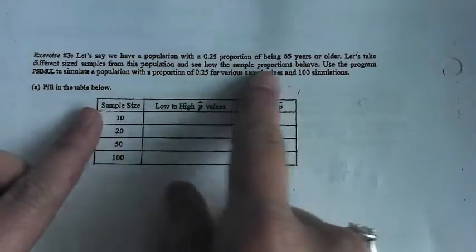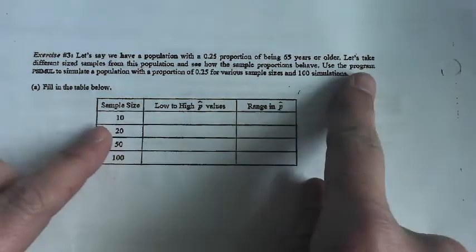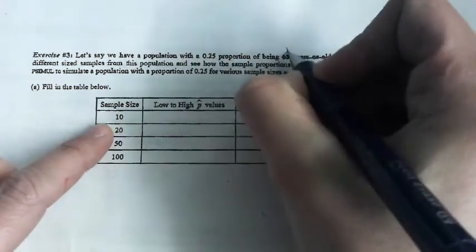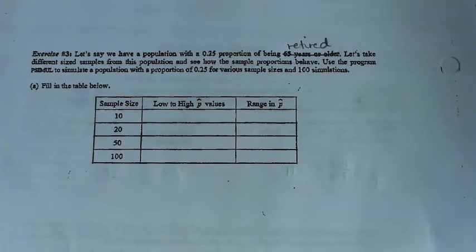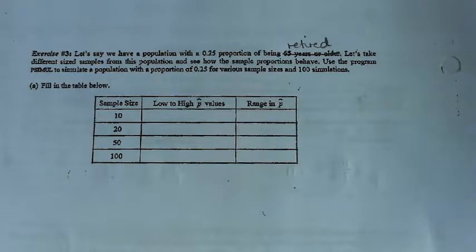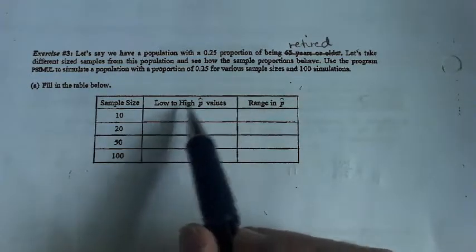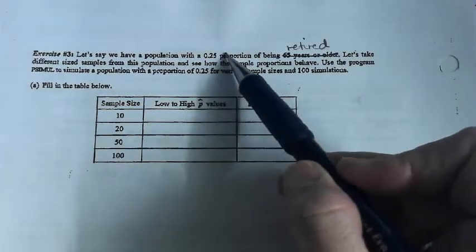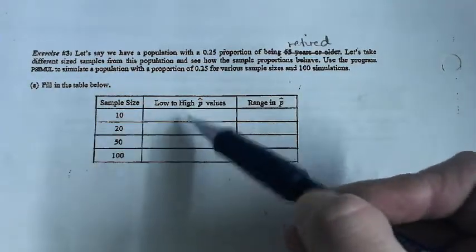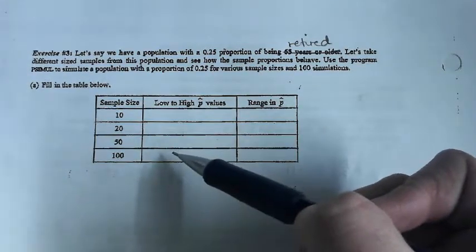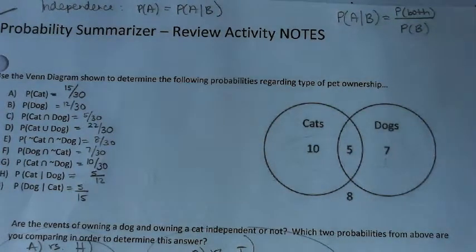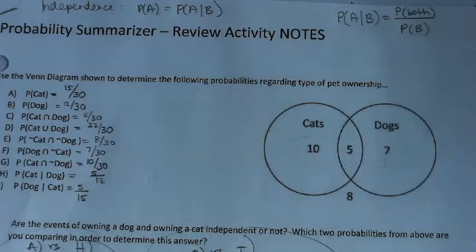Let's say we have a population with 0.25 proportion of being 65 years or older — let's use 'retired.' Let's take different size samples from this population and see how the sample proportions behave. Use the program simulator. We're going to treat the population proportion like it's 0.25, but we're going to change the sample size and see what that does to those values. We're going to run 100 simulations and go.